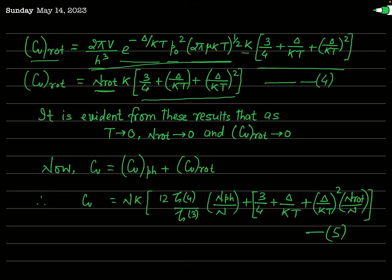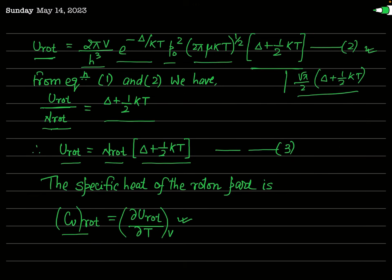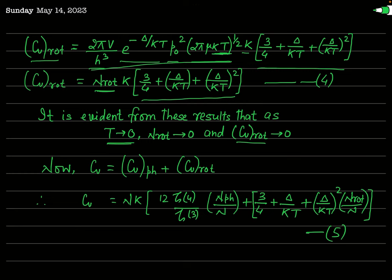From this expression, when T tends to 0, CV_roton tends to 0 due to the exponential factor e^(−delta/kT). Similarly, N_roton also tends to 0 when T → 0. So at absolute zero temperature, the number of rotons is zero and CV due to rotons is also zero, meaning at absolute zero there are no rotons — only phonon excitations exist.